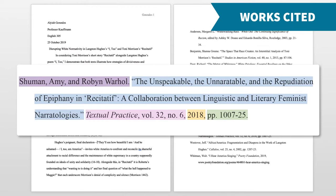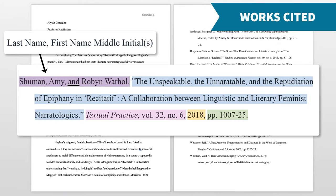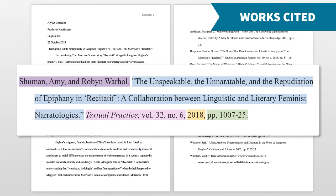In college, you'll probably be citing some academic journal articles. First, include the last name, comma, first name of the author. If the author uses their middle name or initials, include that too. If there are two authors, use AND and write out the first name, middle initial if listed, and last name of the second author in that order. If there are more than three authors, you can just list the first author and use et al., as you would with an in-text citation.